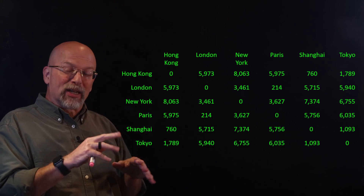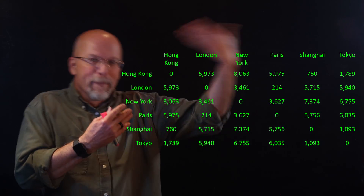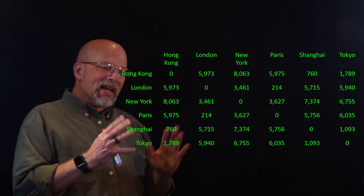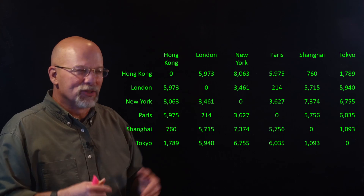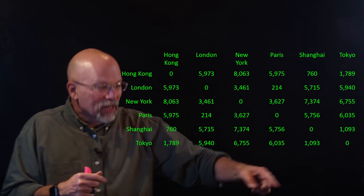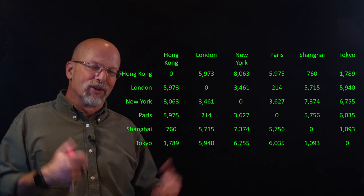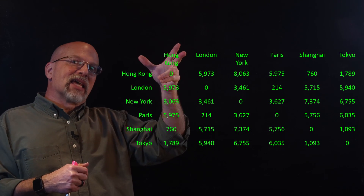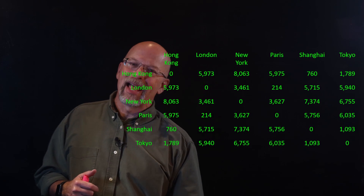To give you an idea of what you might see in the real world when it comes to matrices, here's a symmetric matrix of the distances between some fairly large cities. Down the diagonal there are all 0's — because the distance from a city to itself is 0. But the distance from city A to city B is the same as the distance from city B to city A, which gives you that symmetric structure.